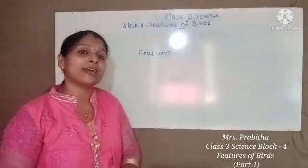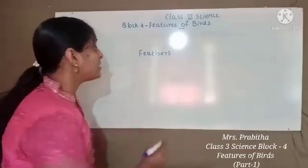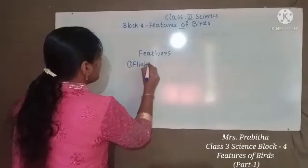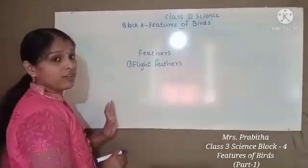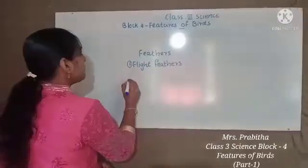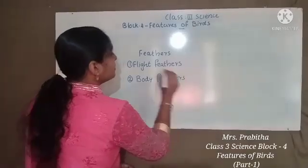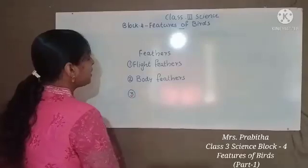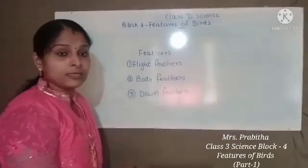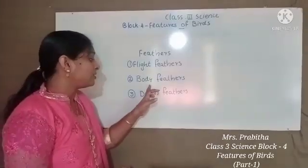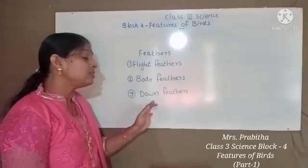There are three main types of feathers that birds have. The first one is flight feathers — F-L-I-G-H-T — flight feathers. The second type is body feathers. The third type is down feathers. So the three types are: flight feathers, body feathers, and down feathers.